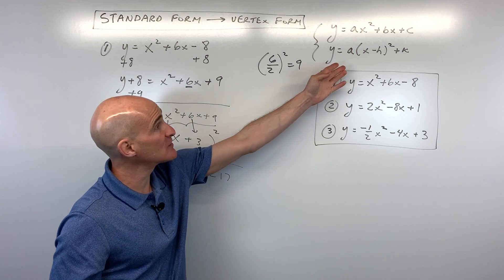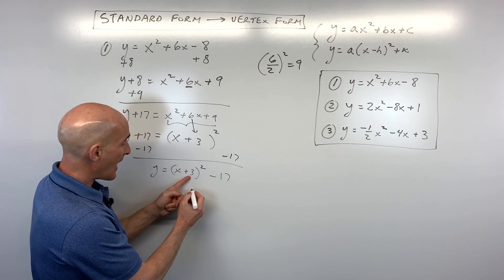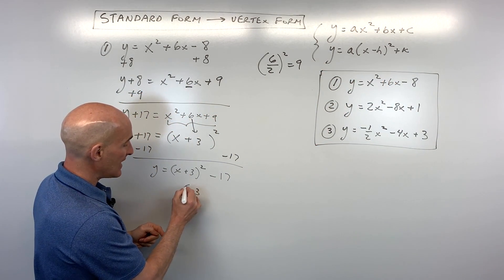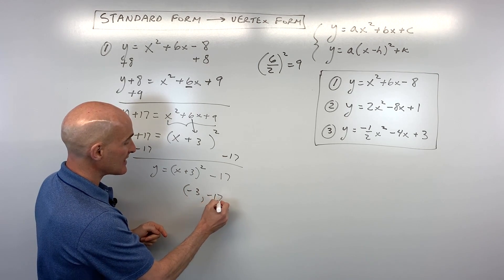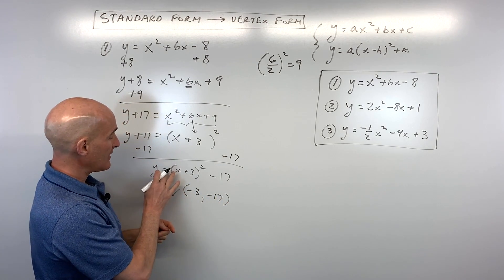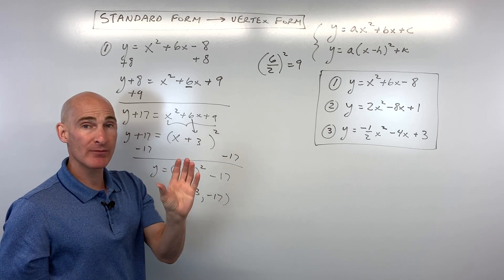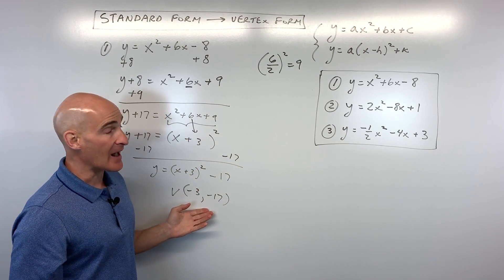That gives us y equals the quantity x plus 3 squared minus 17. The vertex is going to be at the opposite of positive 3, which is negative 3, and negative 17. So the vertex is (−3, −17). The a value is positive 1, so the parabola opens up.